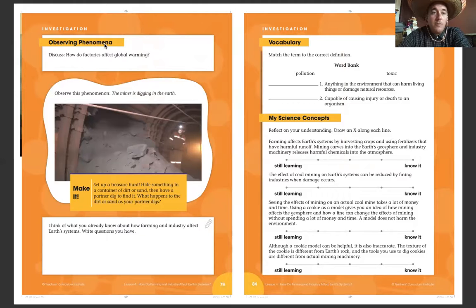So this is the observing phenomena, like seeing things you don't understand. It says discuss: How do factories affect global warming? I want you guys to answer that in a very short, brief way right here.